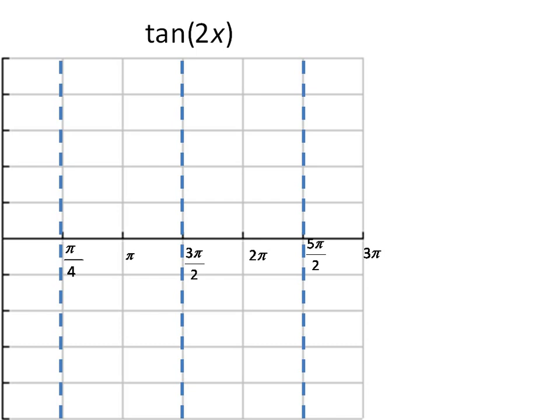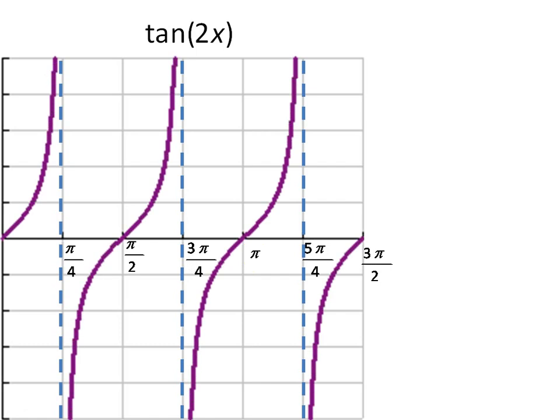So pi over 2 divided by 2 is pi over 4. Pi divided by 2 is pi over 2. 3 pi over 2 divided by 2 is 3 pi over 4. 2 pi divided by 2 is pi. 5 pi over 2 divided by 2 is 5 pi over 4. And finally, 3 pi divided by 2 is 3 pi over 2. Now, at this point, we can go ahead and do our sketch, and we're finished. There's tangent 2x.